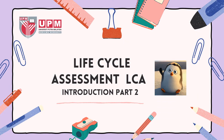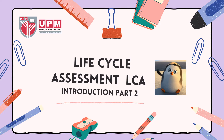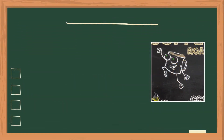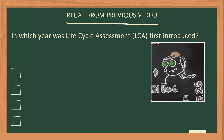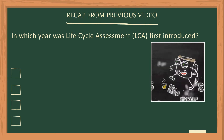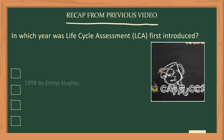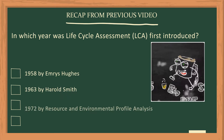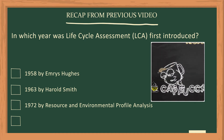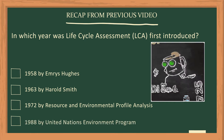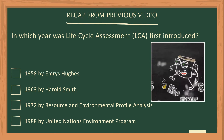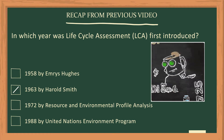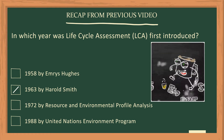Hi, welcome back to Life Cycle Assessment LCA Introduction Part 2. Before we start, let us recap on the previous video. In which year was Life Cycle Assessment LCA first introduced? A: 1958 by Emiris Hughes, B: 1963 by Harold Smith, C: 1972 by Resource and Environmental Profile Analysis, D: 1988 by United Nations Environment Program. The correct answer is B: 1963 by Harold Smith.